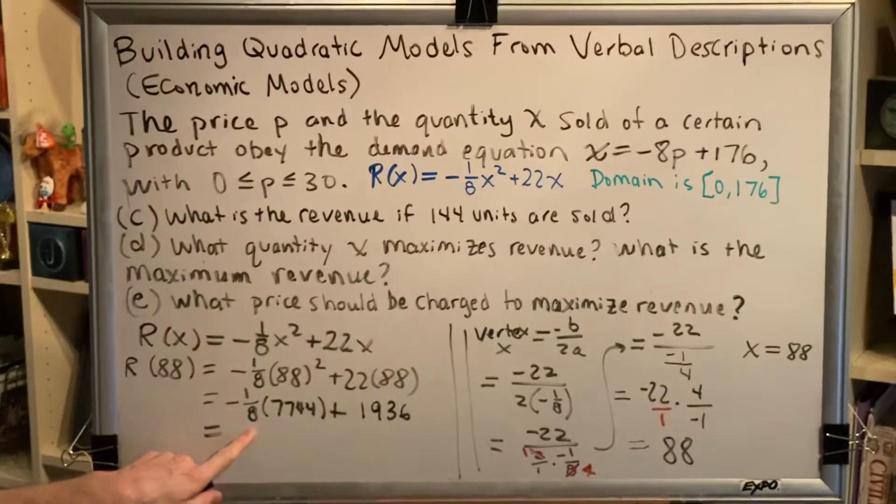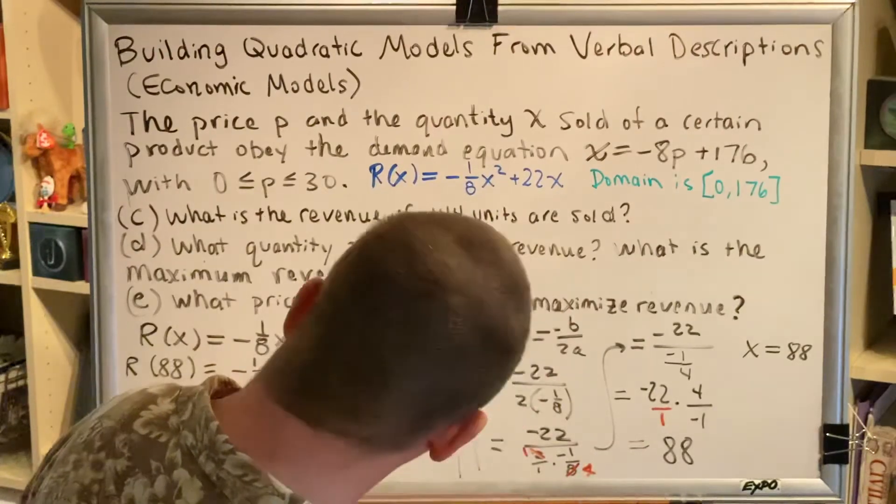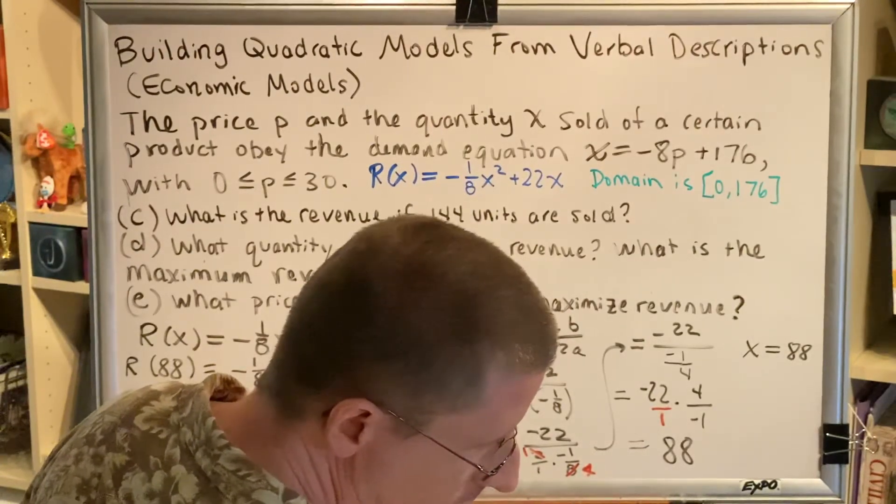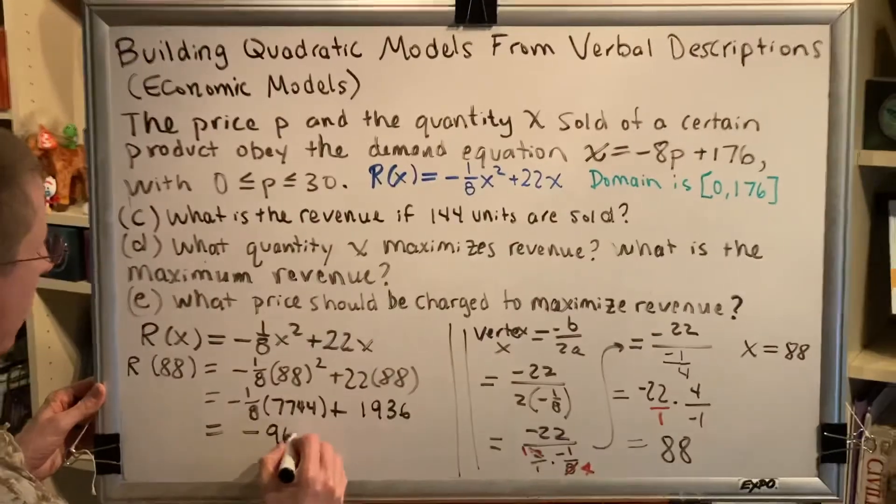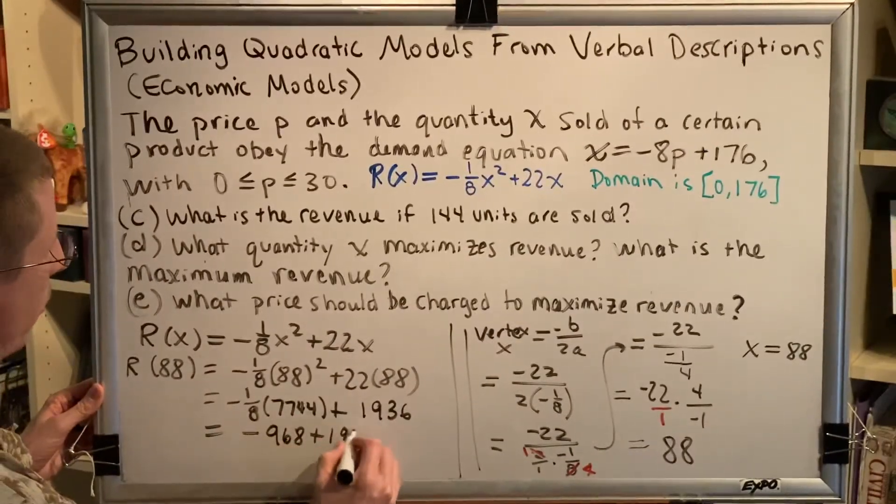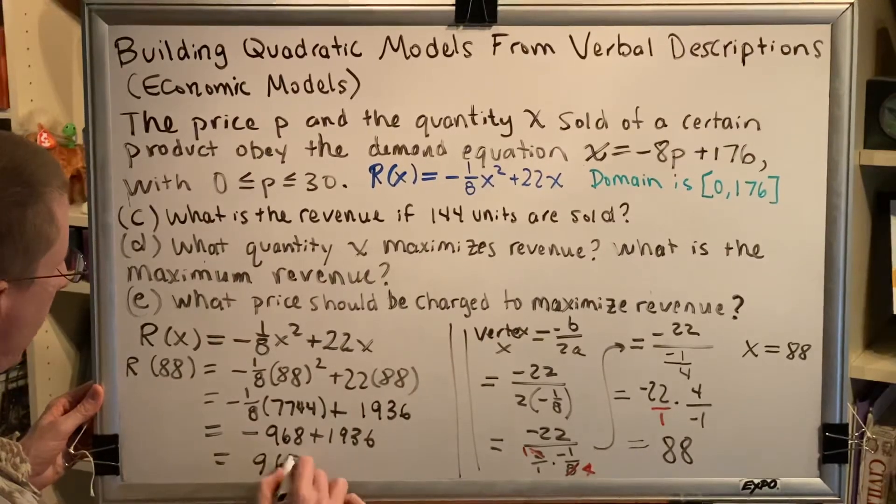Multiplying by 1/8 is the same as dividing by 8. So, 7744 divided by 8 is 968 and then make it negative. So,